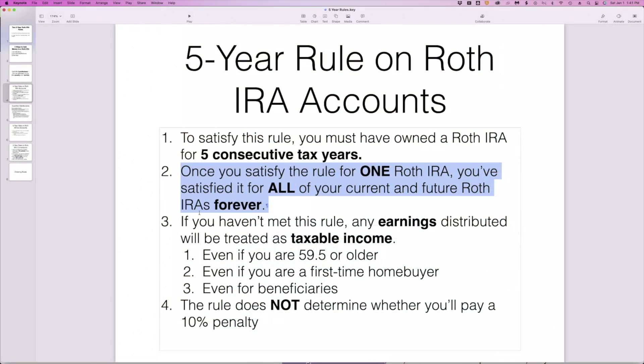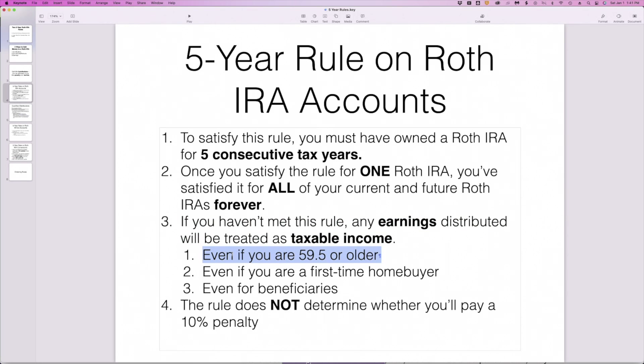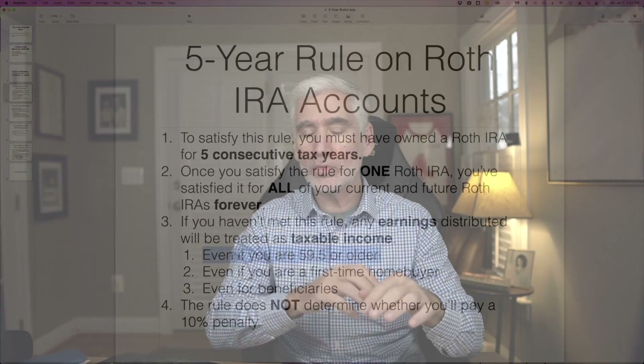What happens if you haven't met the rule? If you take out earnings — remember contributions can come out any time penalty and tax-free — but if you take out earnings before you've satisfied the five-year rule, those earnings will be subject to tax. That's true even if you're 59 and a half years of age or older. So if you opened a Roth IRA for the first time when you're 57 and then take money out at 60, you still have to satisfy this five-year rule. If you haven't, even if you're 59 and a half or older, the earnings will be subject to income tax.